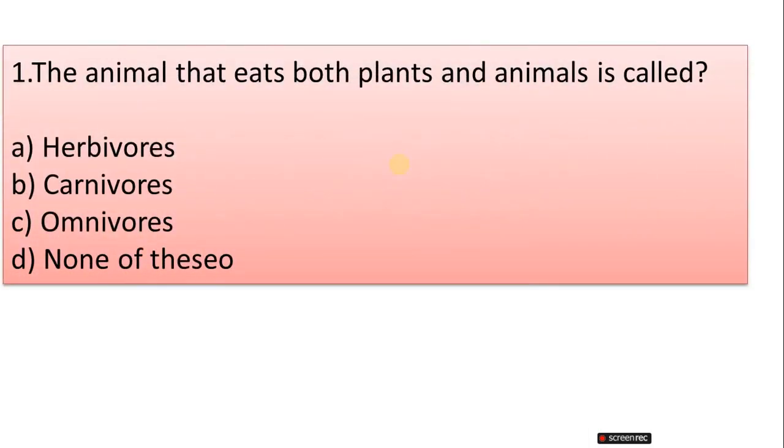Question 1: The animal that eats both plant and animal is called A. Herbivorous, B. Carnivorous, C. Omnivorous, D. None of these.